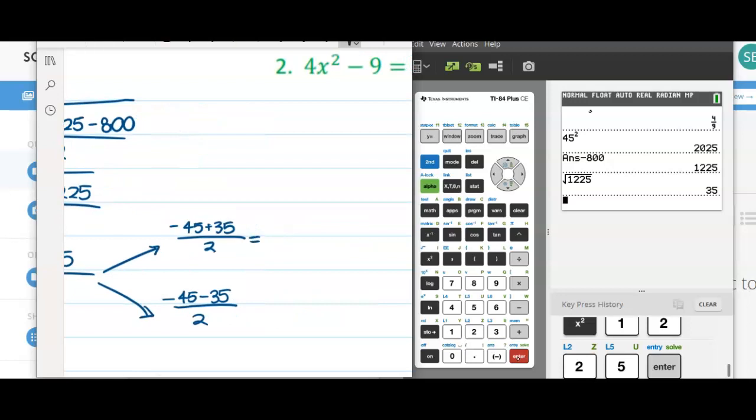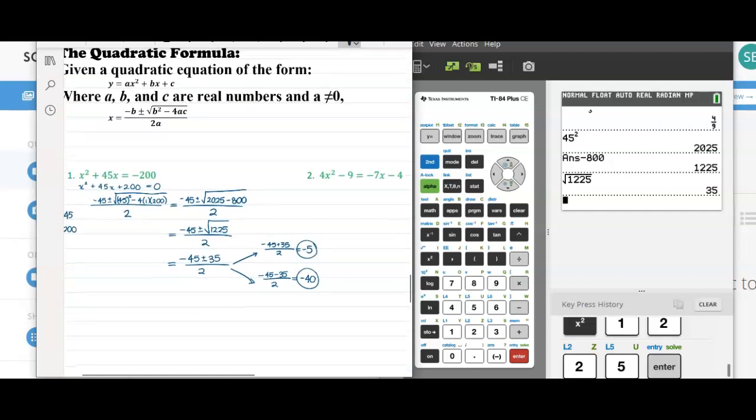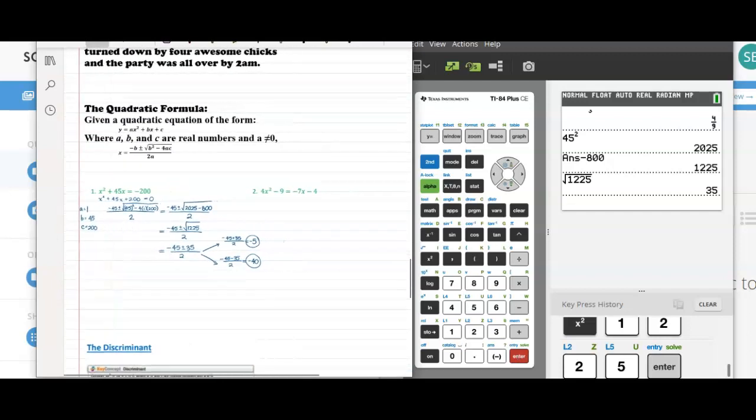Right here, we have negative 10 over 2, which is negative 5. And right here, we end up with negative 80 divided by 2, which is negative 40. Those are our two answers, our two solutions.